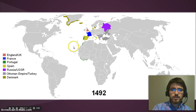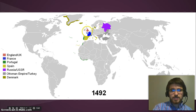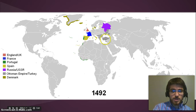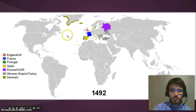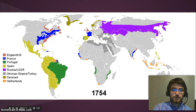As you can see here in 1492, there really aren't too many empires to speak of. You got England, France, Spain with some colonies, Portugal with some colonies along Africa. The Ottoman Empire is pretty substantial. You got Russia, and Denmark has some colonies up in Iceland and Greenland. But by 1754, these European empires are everywhere.